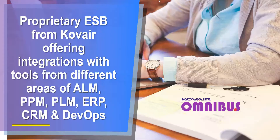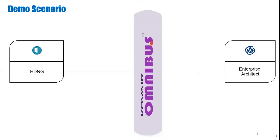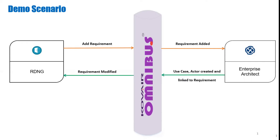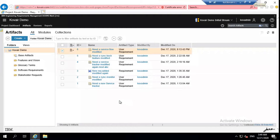Hello everyone. Welcome to this demo on Doors Next Generation and Enterprise Architect integration. As a business analyst, I will be creating a new requirement in RDNG that will sync to Enterprise Architect. Next, the design architect will work on the synced requirement and link the designed artifacts with that requirement and push the entire diagram to target tool through Omnibus. As soon as the design phase gets completed, automatically the requirement status gets updated in RDNG. So, let us move ahead and start with the demo.